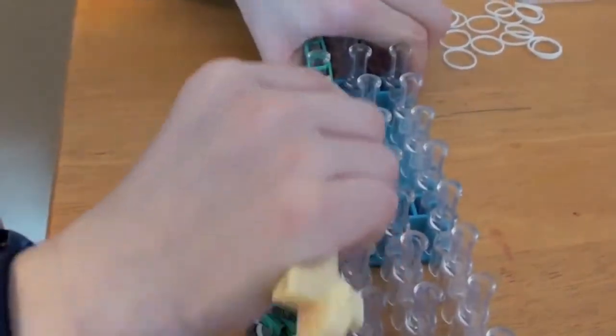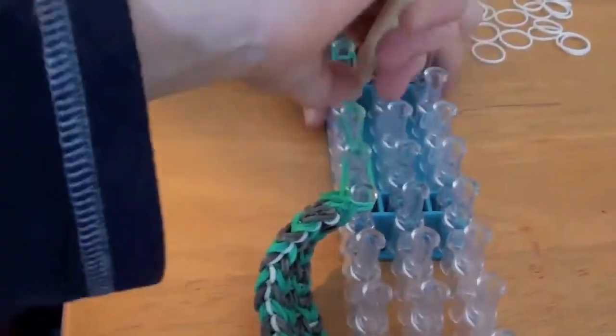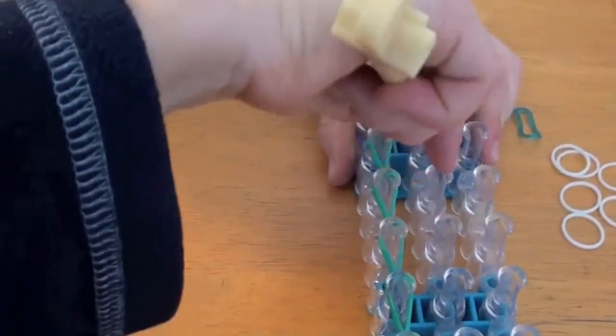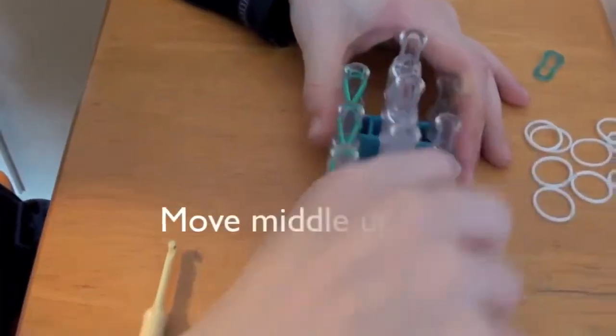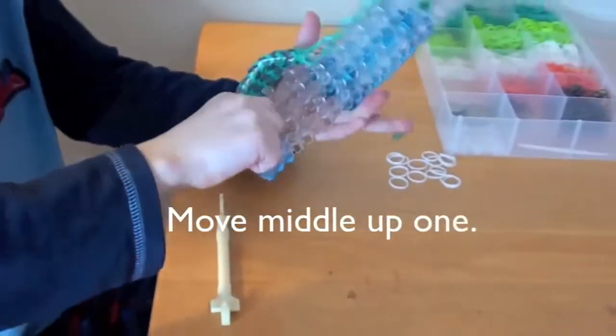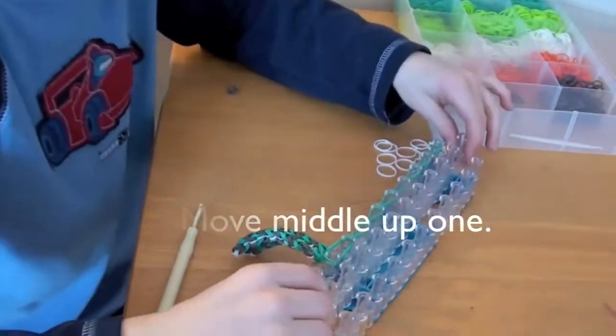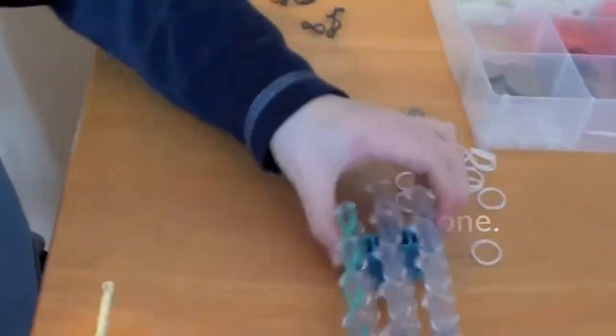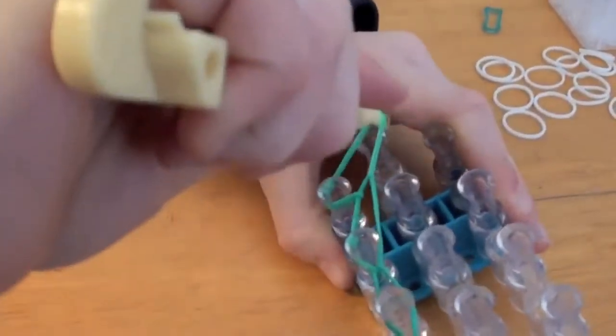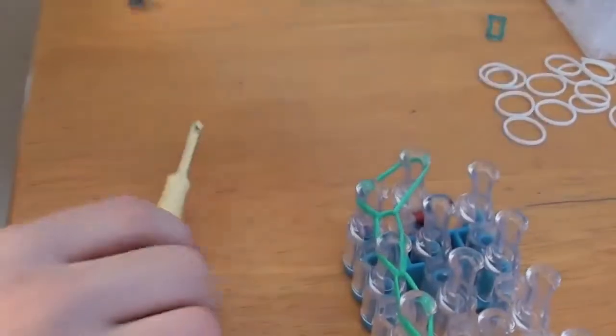Now you're going to take the bottom one, pull it to this peg. Now before you take these bands onto this peg, I want you to take the middle section out and move it at one. Like that. Now you can take these and put them onto that peg.